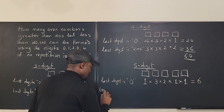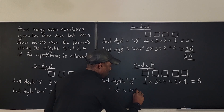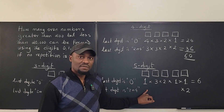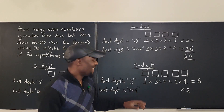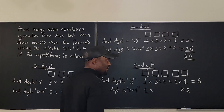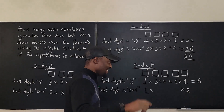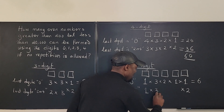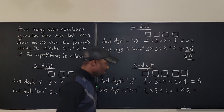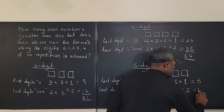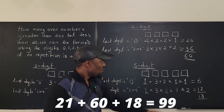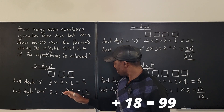Case two for five-digit numbers: last digit is two or four — two options. The first digit must still be one, since the number must be less than 20,000 — one option there. The remaining middle positions have three, two, and one option: 2 × 1 × 3 × 2 × 1 = 12. Total five-digit numbers: 6 + 12 = 18. Adding everything up: 21 + 60 + 18 = 78, plus 21... so the grand total is computed by summing all cases.